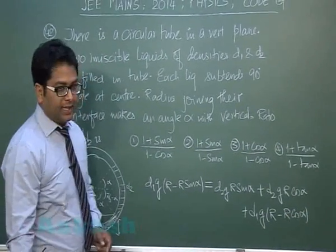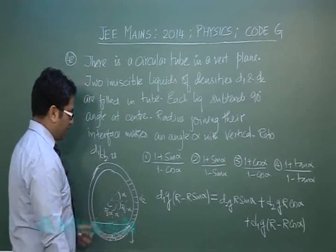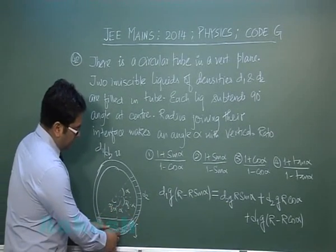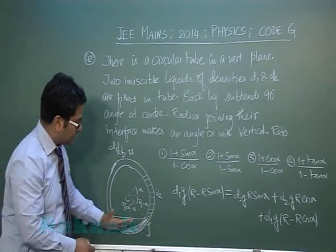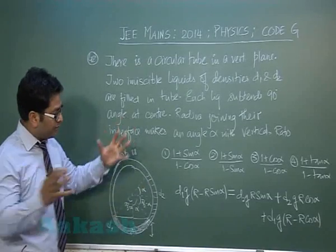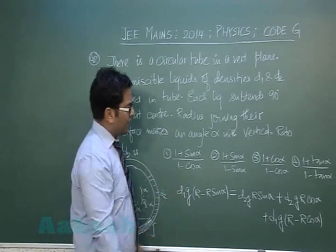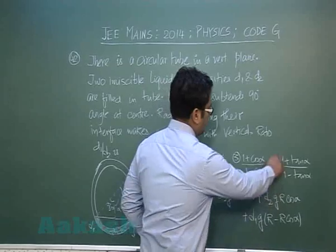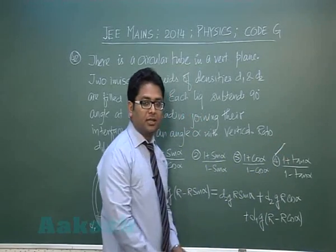What we've done is written the pressure at this point starting from the left-hand side and from the right-hand side, and we've equated them. The rest is a very easy trigonometric solution that will lead you to option number 4.